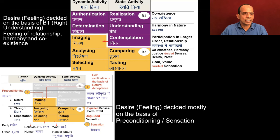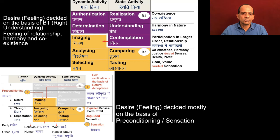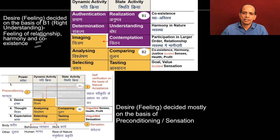Now we can relate the same thing to this diagram. Here we have block B1, where we have the activities of knowing. And here we have the activities of imagination. Now when the self is unguided, then only these are active. When the activities of block B1 are activated, then the self is guided — block B2 is guided. So that desire, that is feeling, is decided on the basis of block B1, that is right understanding, that is feeling of relationship, harmony and coexistence.